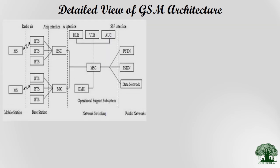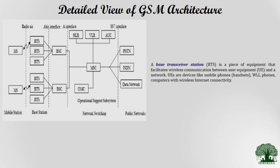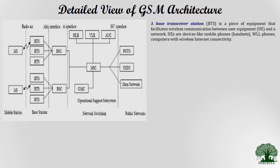In the detailed GSM architecture, MS stands for mobile station — the device we have in our hand. It is not always possible to install one single base station to cover a very large area, so large cells are further classified into small regions called sectors. Each sector is taken care of by a BTS — base transceiver station — which is equipment that facilitates wireless communication between the user equipment and the network.